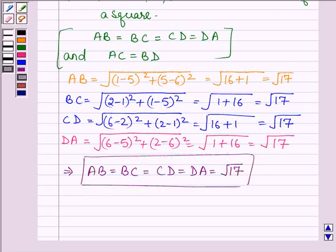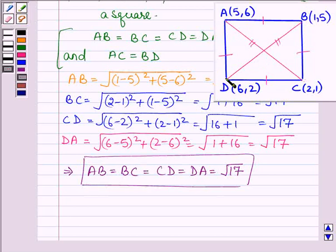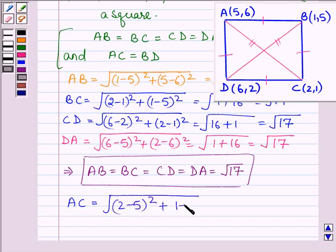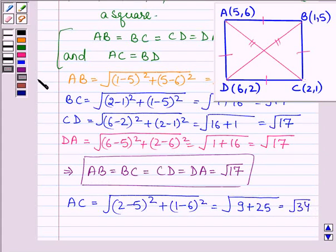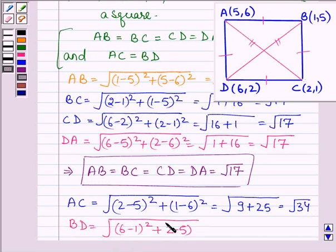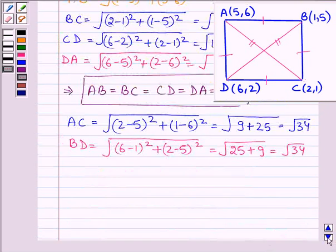Now let us find the length of the diagonals AC and BD. AC equals the square root of (2 minus 5) whole square plus (1 minus 6) whole square, equal to root over 9 plus 25, which is root 34. The distance BD is given by the square root of (6 minus 1) whole square plus (2 minus 5) whole square, again equal to root over 25 plus 9, which is root 34.